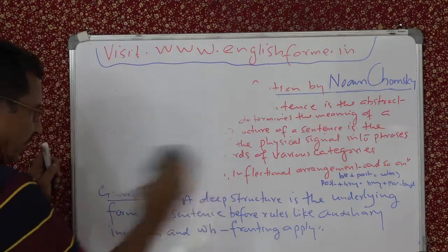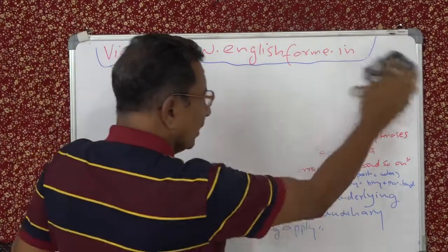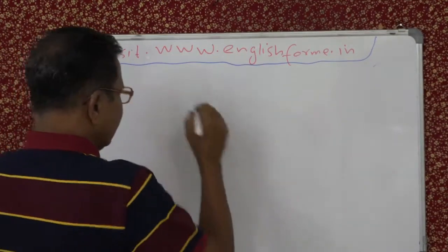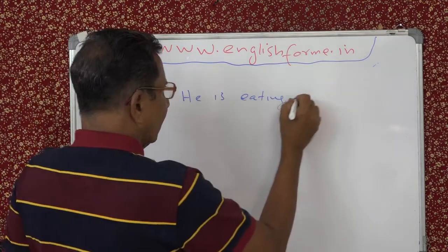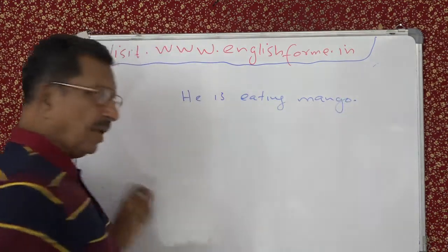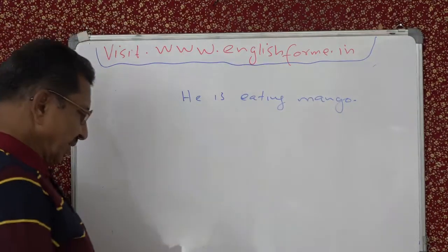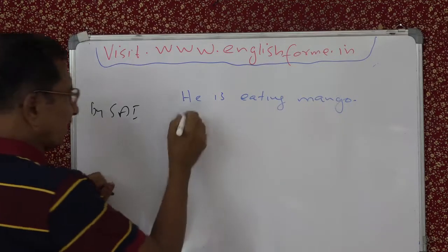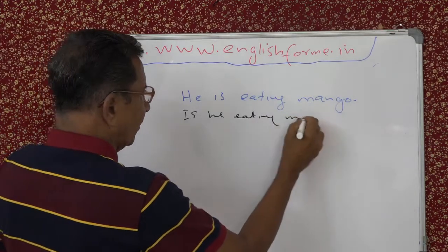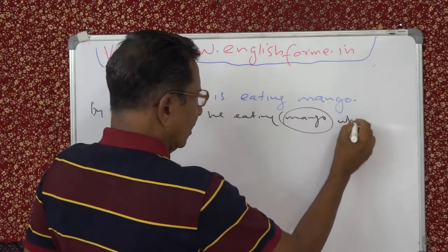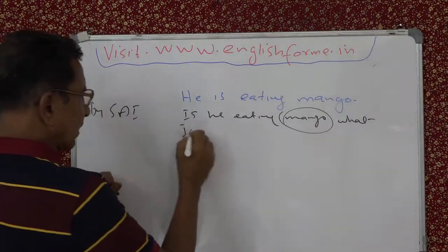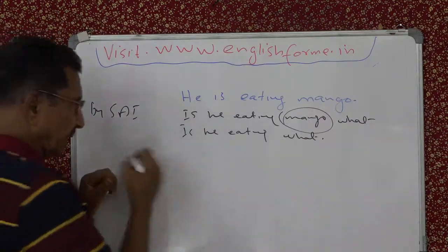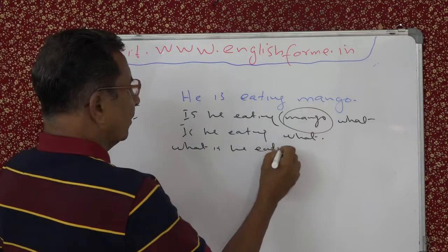Grover Hudson says the deep structure is the underlying form of a sentence before rules like auxiliary inversion and WH-fronting apply. For auxiliary inversion: you have a declarative sentence 'he is eating mango'. You apply the SAI rule — subject-auxiliary inversion — giving 'is he eating mango?'. Then replacing 'mango' with 'what' and fronting the WH word, you get 'what is he eating?' — that is the WH question.